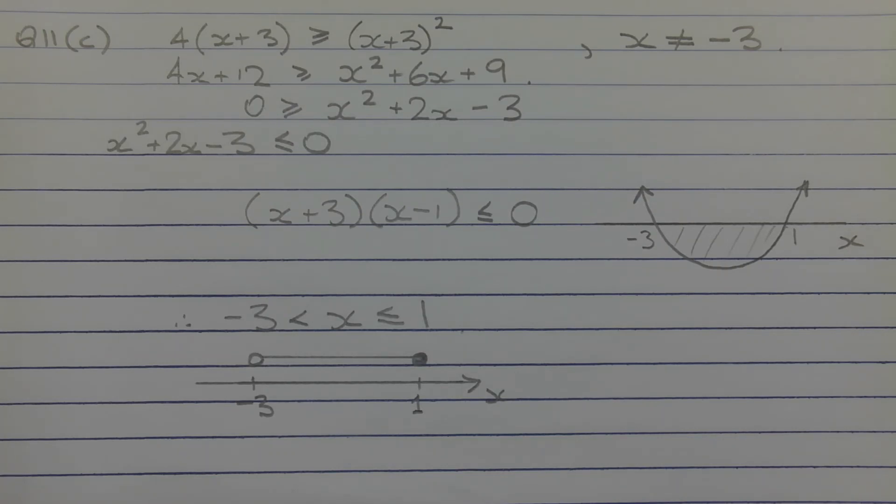Expanding the brackets on both sides of the inequality, we get 4x plus 12 greater than or equal to x squared plus 6x plus 9. The idea is to form a quadratic inequality, and then by